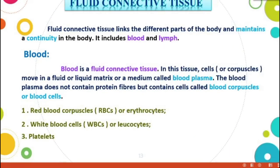Fluid connective tissue: fluid is a substance in liquid form, and it connects other tissues internally inside the body. Fluid connective tissue links different parts of the body and maintains continuity in the body. The first one: blood. Blood is a fluid connective tissue. In this tissue, cells or corpuscles move in a fluid matrix or medium called blood plasma.